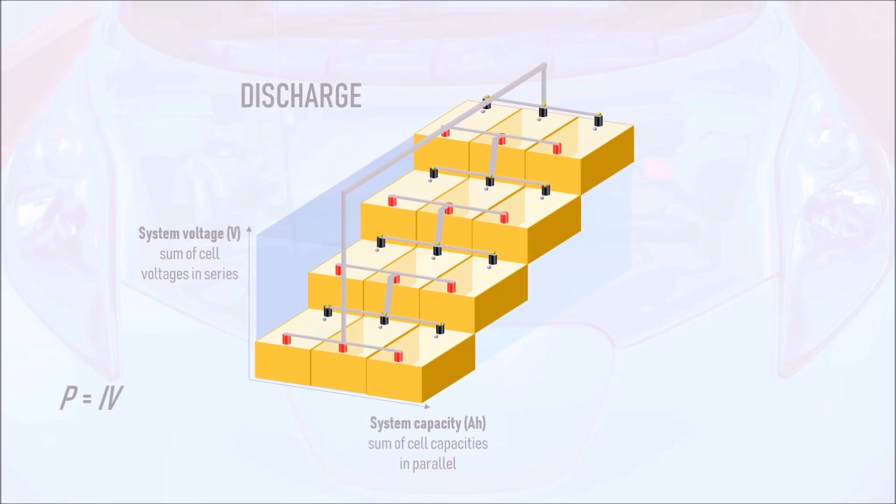Conveniently, having more cells in parallel for a given load also means that each individual cell is worked less hard, which means that less heat is dissipated and the lifespan of the pack is, theoretically, increased.